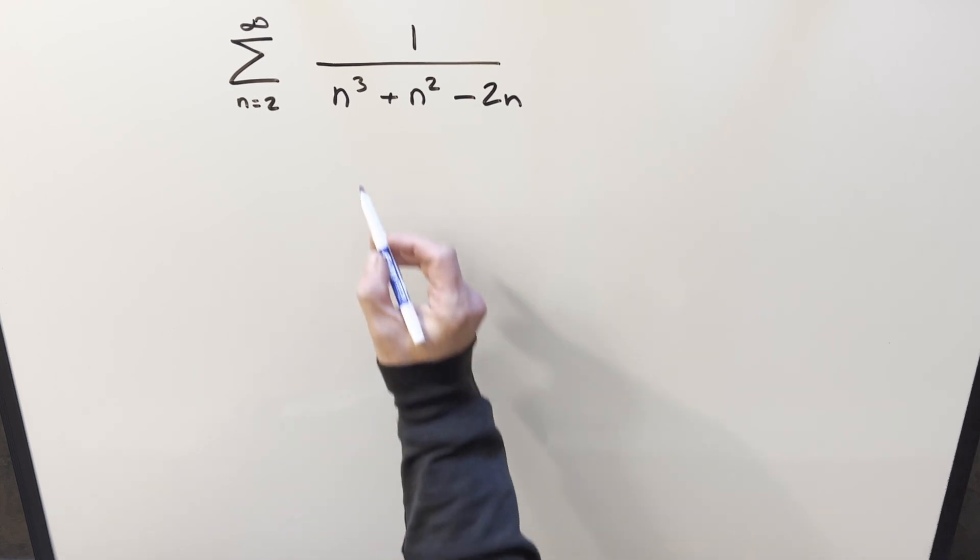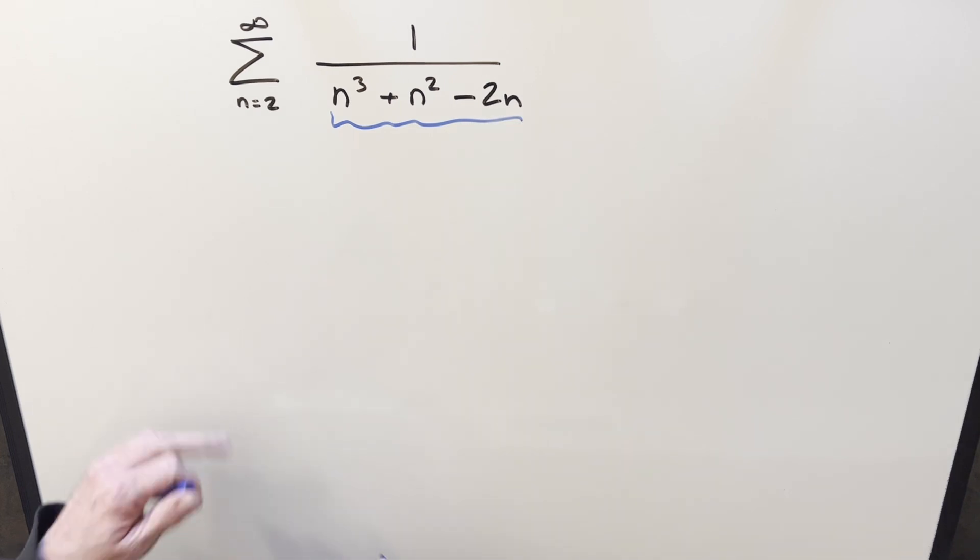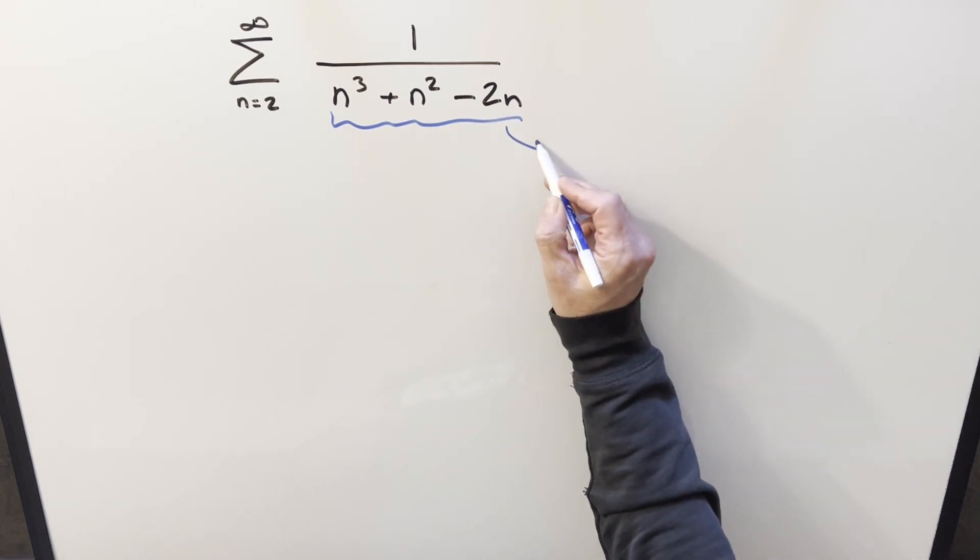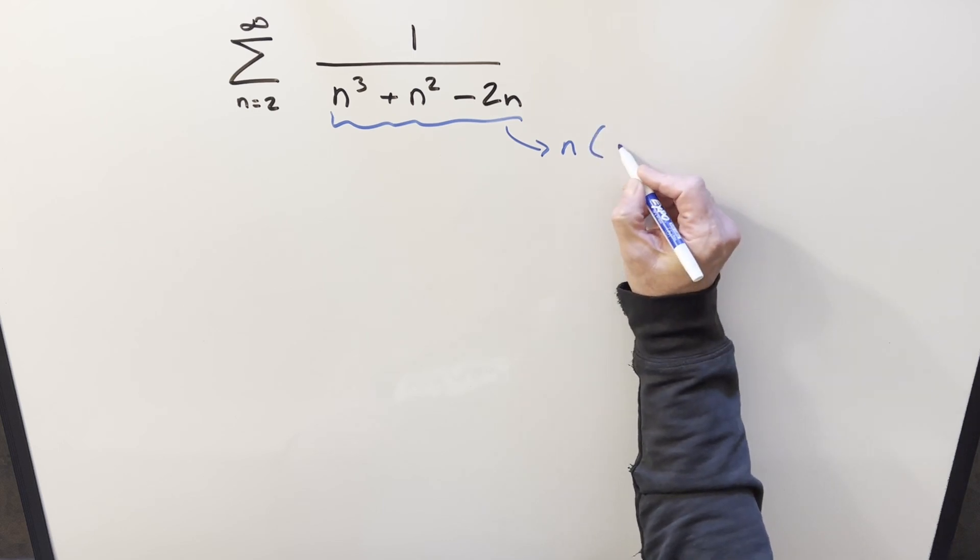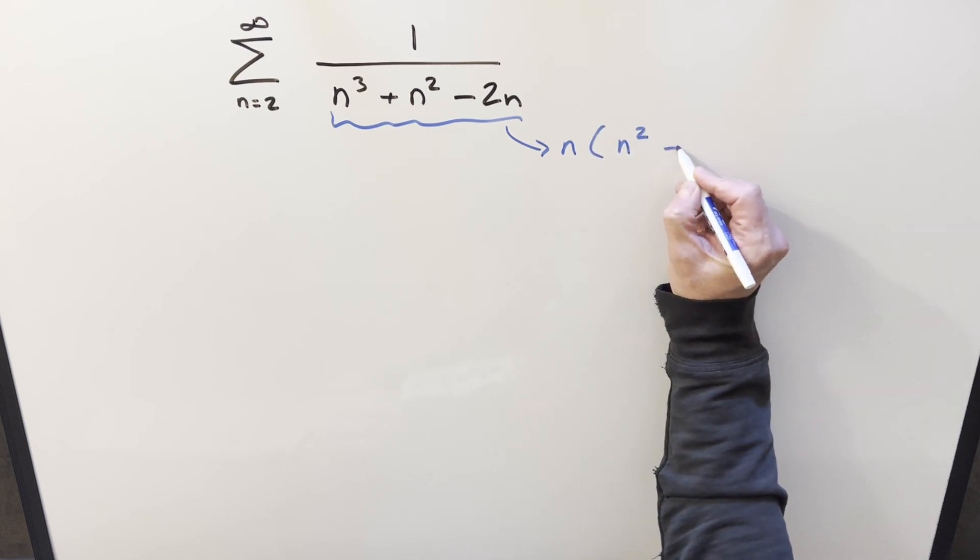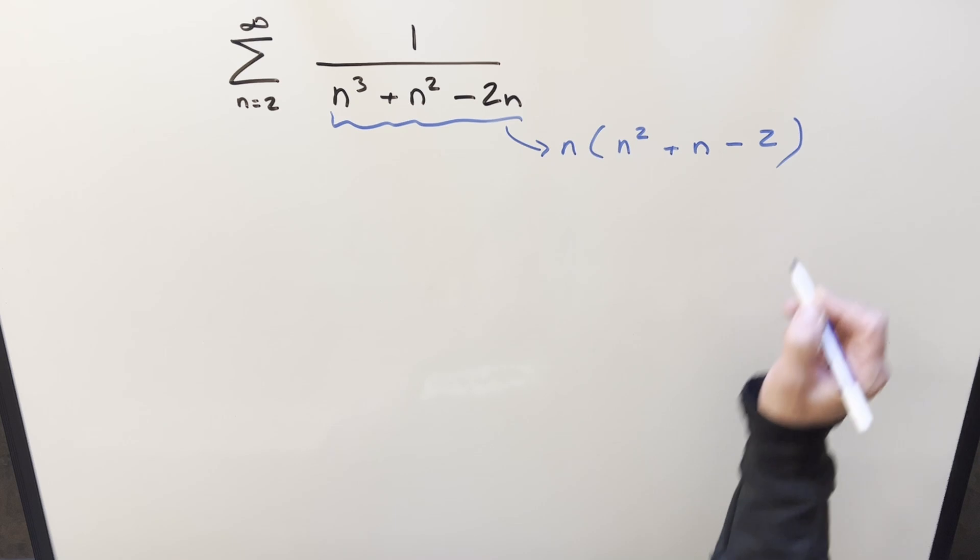Now, to get started with this denominator, this is clearly factorable. First of all, I can factor an n out to start, so we can write this as n times n squared plus n minus 2.